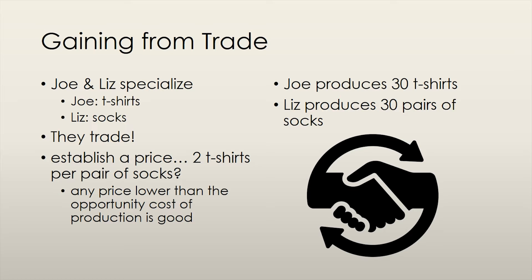The information we extracted from the problem can now be applied to our economy to make it more efficient. We get Joe and Liz to specialize in producing whatever they are more efficient at — Joe has the comparative advantage in producing t-shirts, while Liz has the comparative advantage in producing socks. So Joe will only produce t-shirts and Liz will only produce socks, and they then trade with each other. Let's say the trade price is 2 t-shirts per pair of socks, which also means 1 t-shirt trades for half a pair of socks.